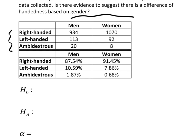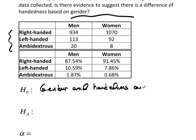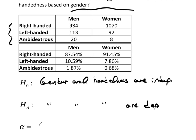The null hypothesis, generically, would be that the rows and columns are independent. So here, gender — the columns — and handedness are independent. The alternative is that there's a connection between these; in other words, they are dependent. State alpha at 0.05 as usual.